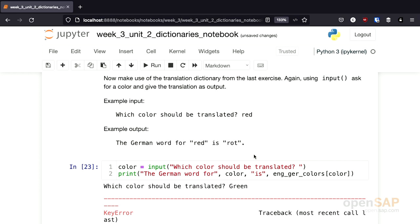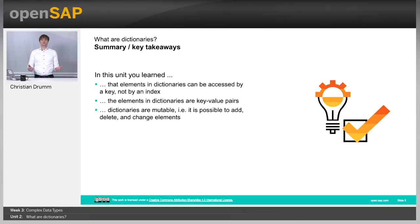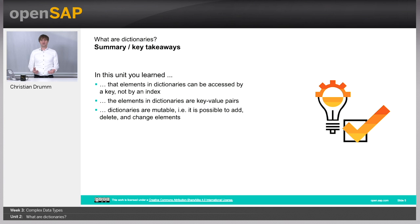That's it for the introduction to dictionaries. What have you learned in this unit? You've seen how to use dictionaries to access elements using a key instead of an index. You've learned that elements in a dictionary are key-value pairs and that dictionaries are mutable — so it's possible to add, change, or delete elements. Thanks for watching, and see you again in one of the upcoming units.